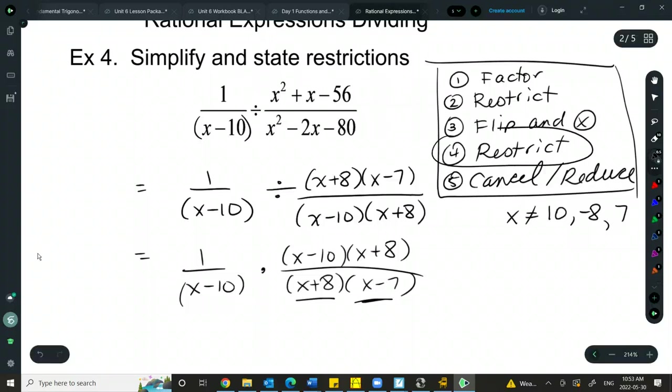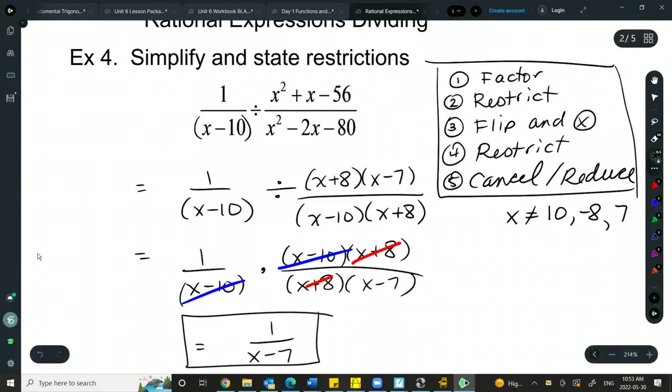So we're now at number 4. We just finished restricting one more time on the bottom. Now that we have multiplication, I can cancel anything on the top with anything on the bottom. In order to cross-cancel, I must have multiplication in between here. If I have addition or subtraction or division, there's no cross-canceling allowed. Only to the top and bottom of the fraction could I cancel. So I can cancel these, and I can cancel these, and I'm left with 1 over x minus 7. And that will be part of my answer as well.